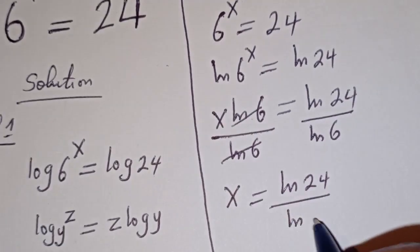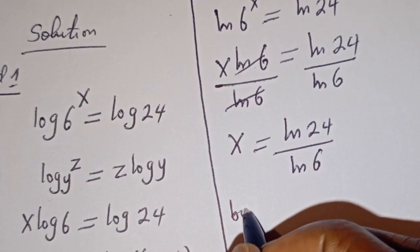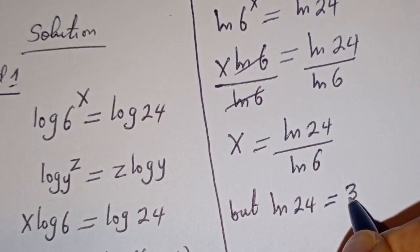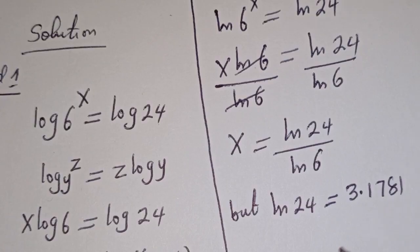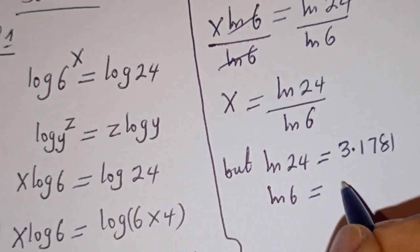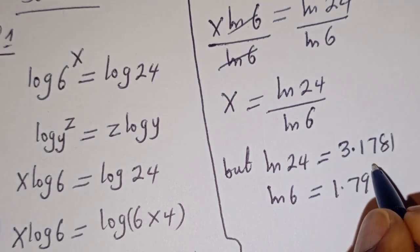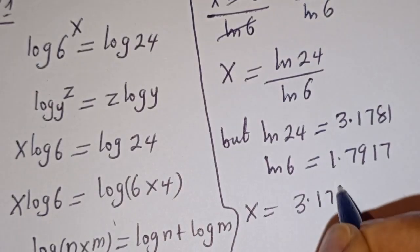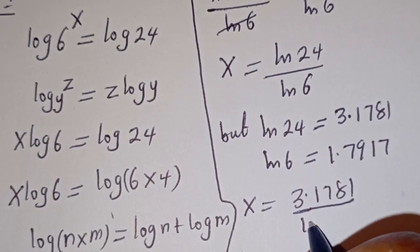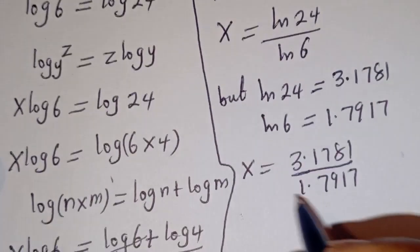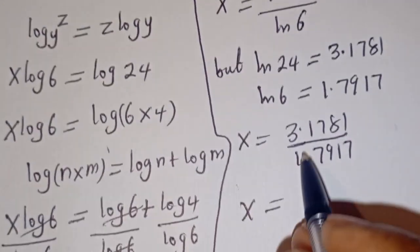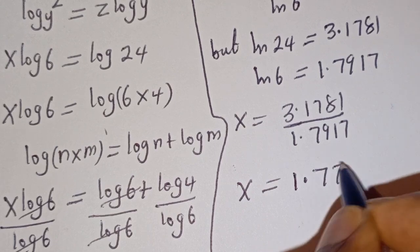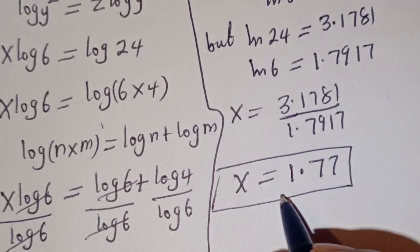x is equal to ln of 24 divided by ln of 6. Now, ln of 24 is equal to 3.1781 and ln of 6 is equal to 1.7917. Then x is equal to 3.1781 divided by 1.7917. If you divide 3.1781 by 1.7917, we have 1.77, and this is the value of x.